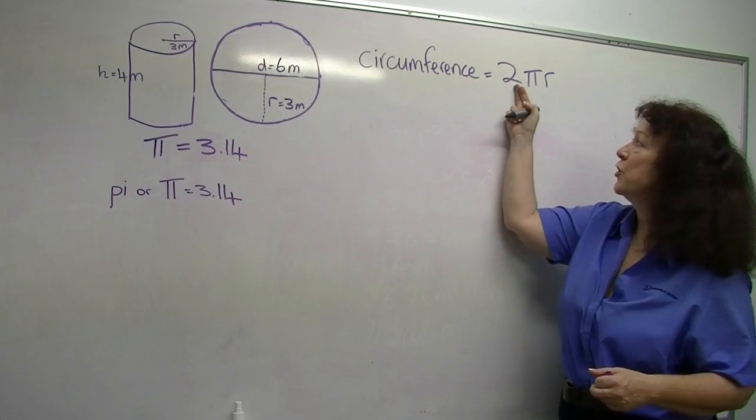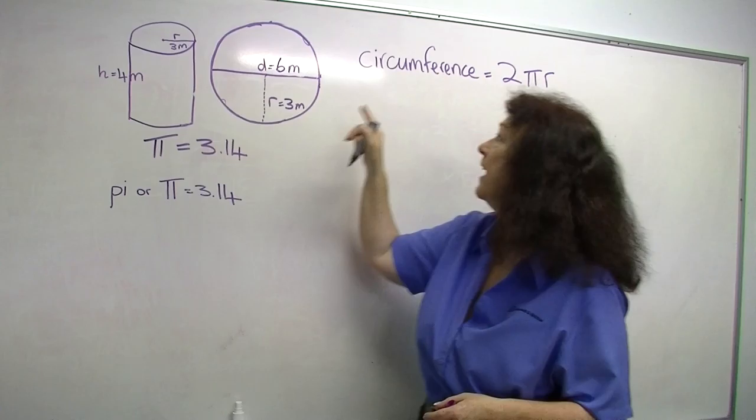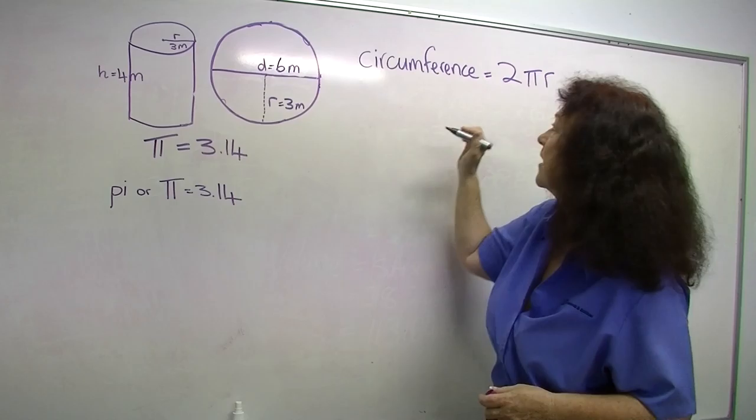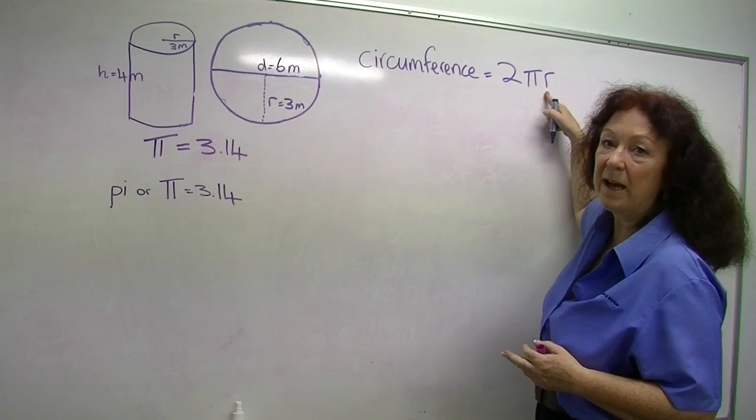The circumference equals 2πr. So remember pi was a unitless mathematical term. We're just using a simple version 3.14 and r is our radius. That's the length from dead center of a circle out to the outside edge in a straight line. So straight away you see this circumference is like the length right round the tank. And you'll notice r is in there only once this time.